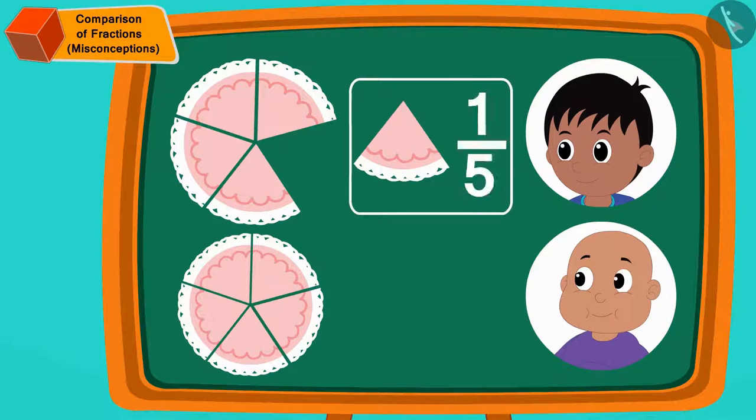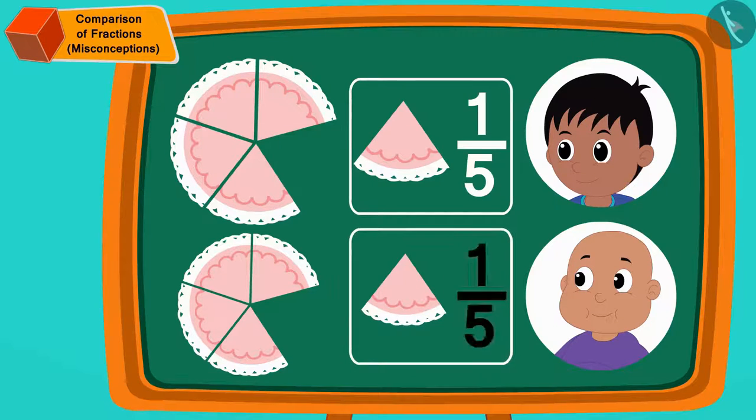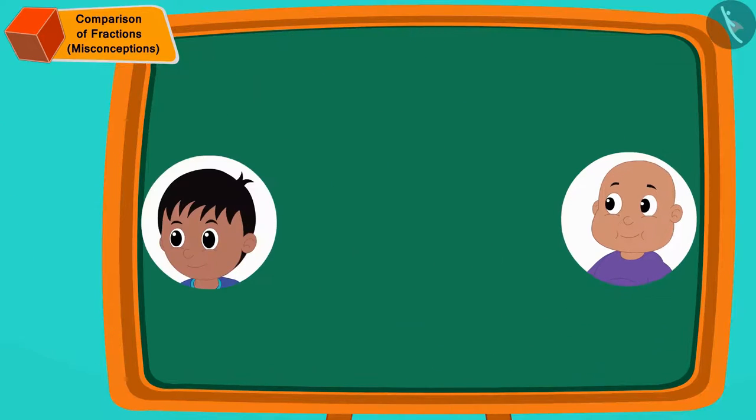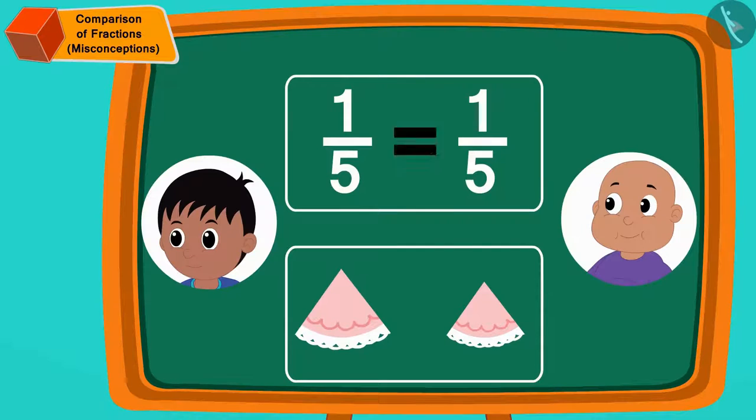Bablu got one piece out of five equal pieces of Chanda's cake. So Bablu got one fifth part of Chanda's cake. The fractions of the cake that Raju and Bablu got are the same. But is the amount of cake they got also the same?